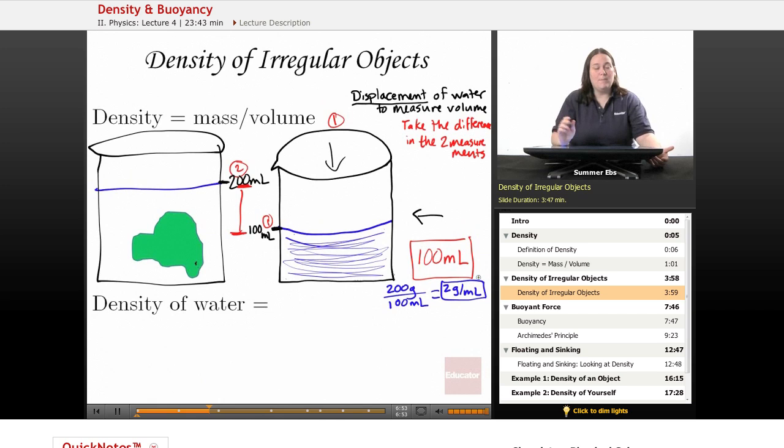And your density of that object is 2 grams per milliliter. Just that simple. Mass divided by volume. And to find the volume, you use displacement.